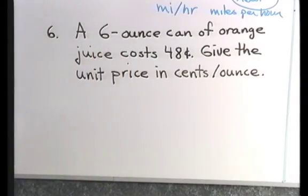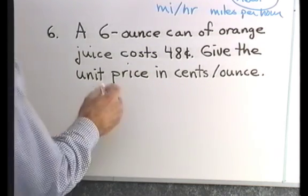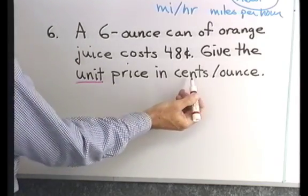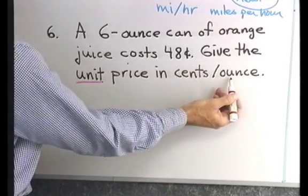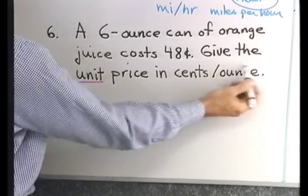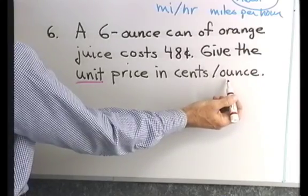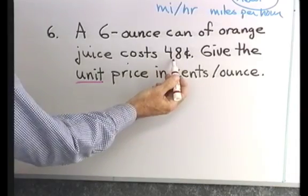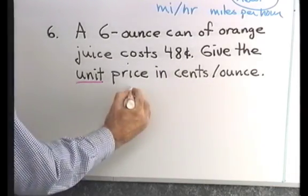Problem number six: a six-ounce can of orange juice costs 68 cents. Give the unit price in cents per ounce. When I talk about the unit price, that's a special rate where I compare the amount of money it costs to the amount of the item I have — in this case a six-ounce can, so it'll be in ounces. I want to put money on top because I want cents per ounce.